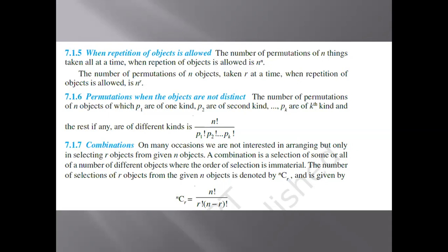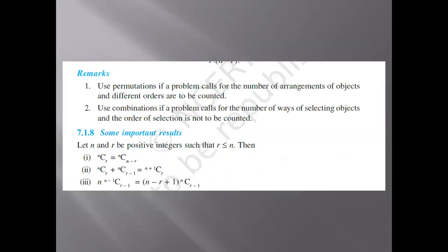Then we come to the concept of combination. On many occasions, we are not interested in arranging but only in selecting r objects from n objects. A combination is the selection of some or all of a number of different objects where the order of selection is immaterial. The number of selections of r objects from n things is denoted by nCr, given by nCr = n! divided by r! times (n − r)!. Use permutation for the number of arrangements and combination for the number of ways of selecting objects.